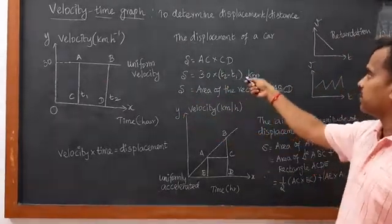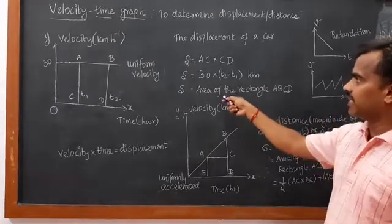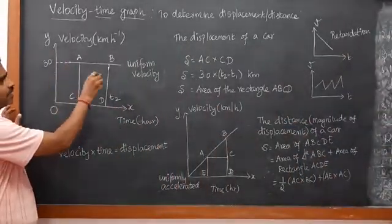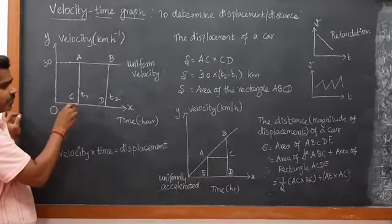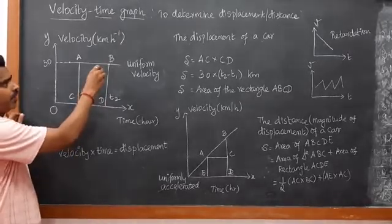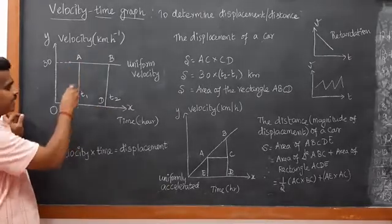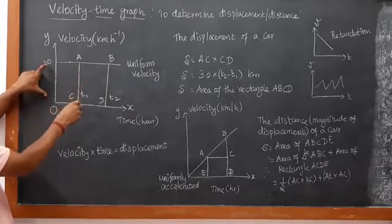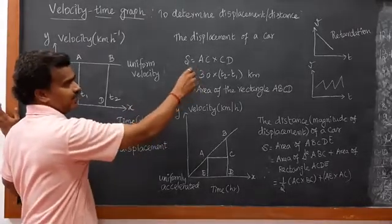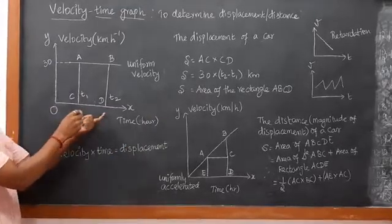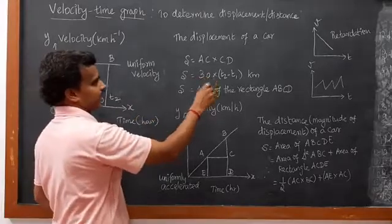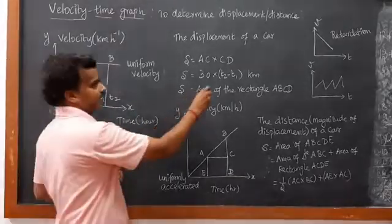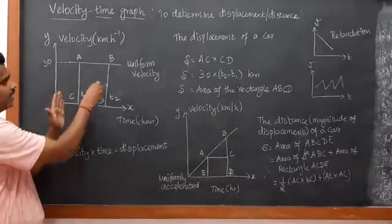Now we are going to calculate the displacement of this car. Displacement S is equal to area AC. At point A I have drawn a perpendicular line which meets point C on the x-axis, and at point B I have drawn a perpendicular line which meets point D. So AC indicates the velocity, and CD is the time scale — CD equals t2 minus t1. Here the time taken is t1 and here t2, so the time taken is t2 minus t1.